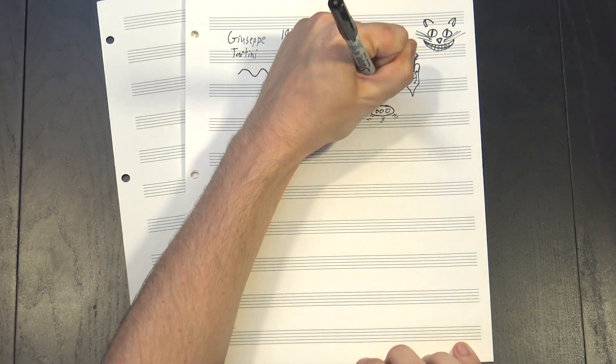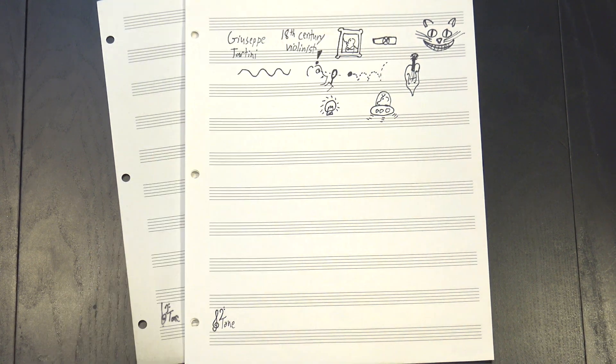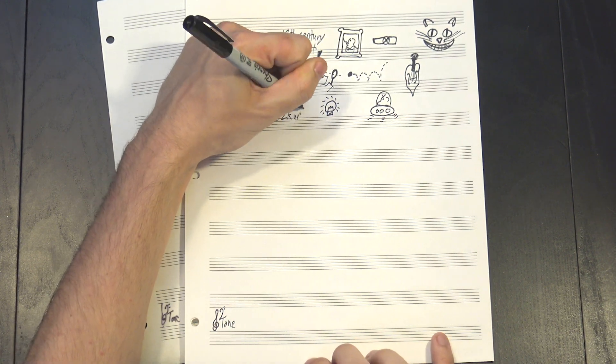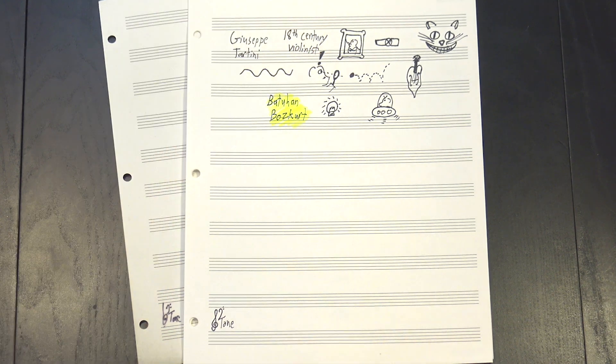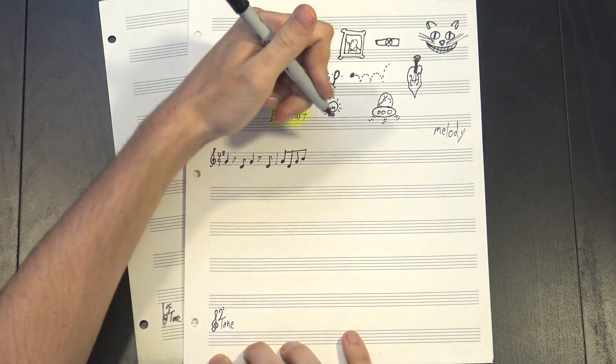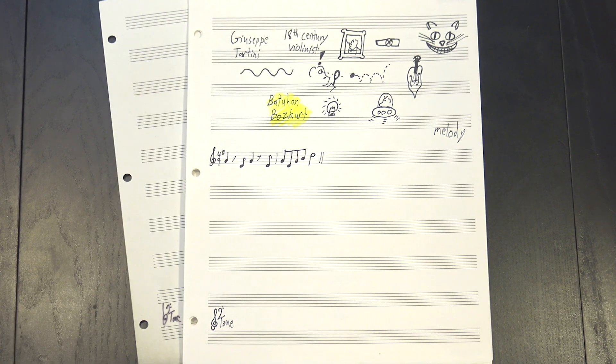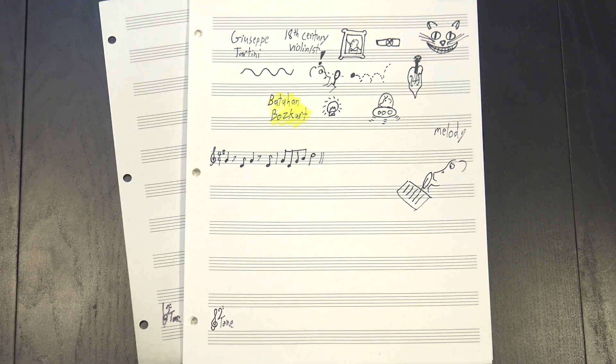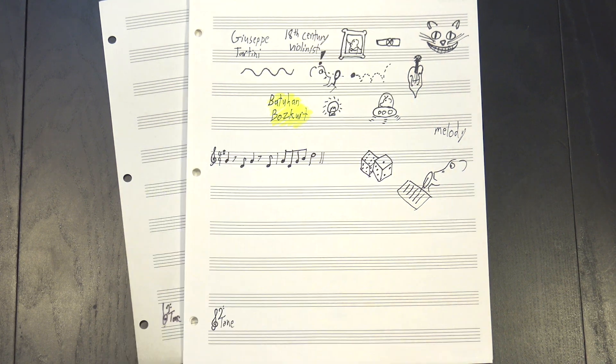Which brings us back to our piece from the beginning. This is a really clever way of using combination tones that I first encountered in an article by Batuhan Boskert, linked in the description. It starts with a melody, which I shamelessly ripped off from Mozart.